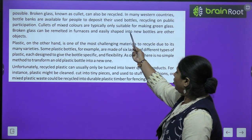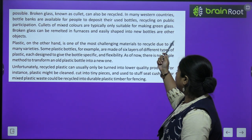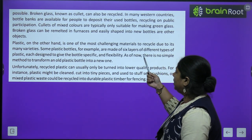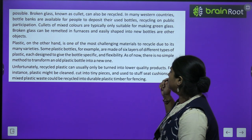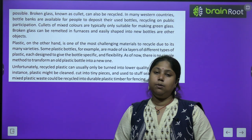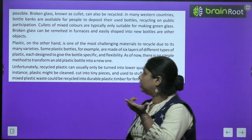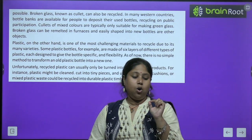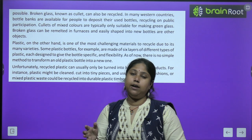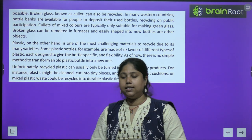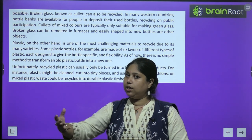Broken glass known as cullet can also be recycled. In many western countries, bottle banks are available for people to deposit their used bottles — recycling depends on public participation. Cullets of mixed colors are typically only suitable for making green glass. Broken glass can be remelted in a furnace and easily shaped into new bottles and other objects. Broken glass के pieces को collect किया जाता है, furnace में डाला जाता है, glass पिघल जाती है और molten state में आने के बाद उसे नए shapes दिए जाते हैं।